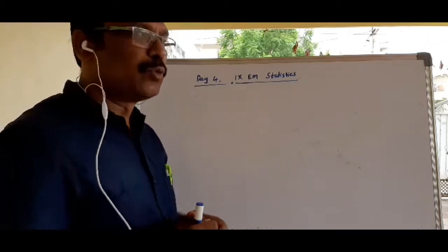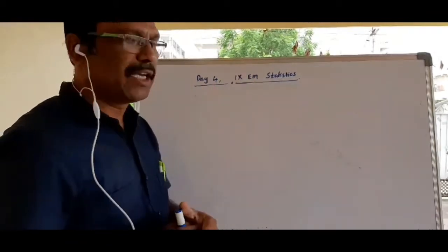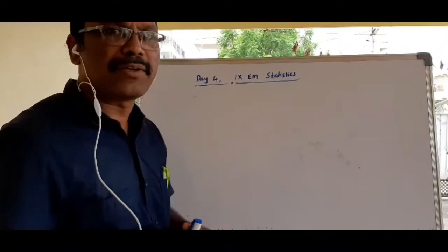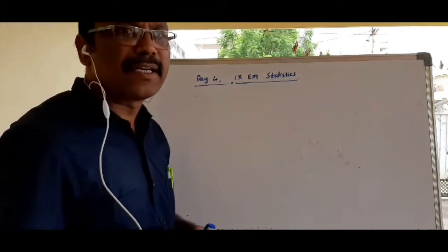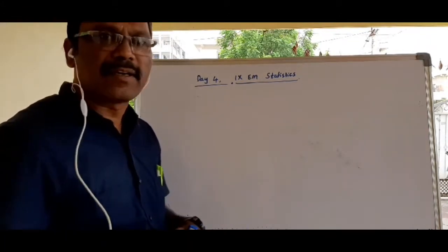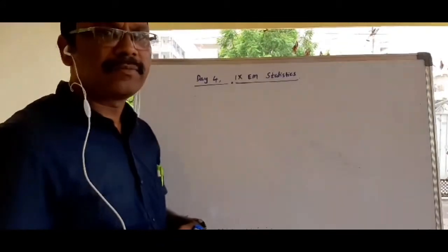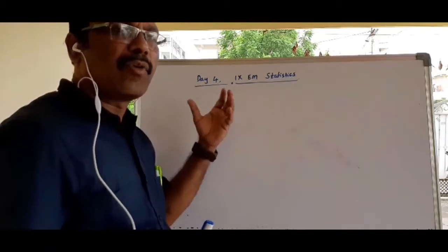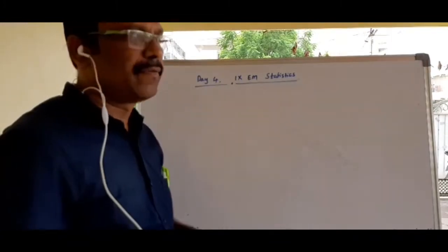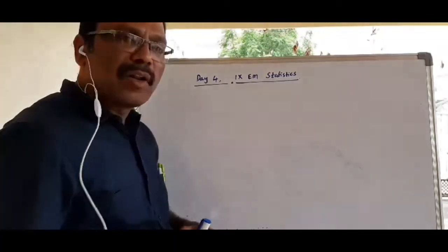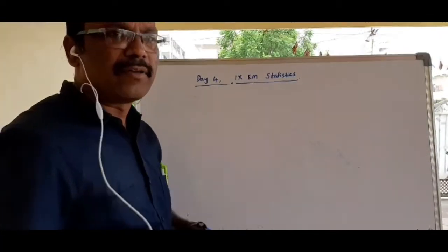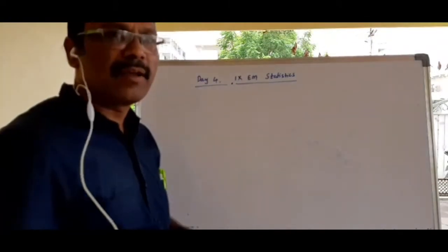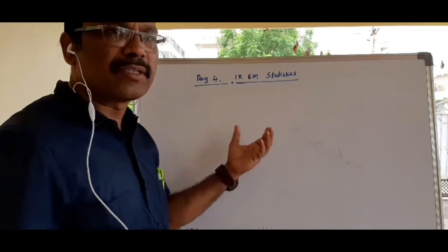Hi students, welcome to day 4 of 9th class English Medium Statistics. Yesterday we discussed the graphical representation of raw data and the measures of central tendency. We have three measures of central tendency: the arithmetic mean, the median, and the mode. Yesterday we already discussed the arithmetic mean for raw data. The formula is: mean equals sum of all observations divided by number of observations. From that we derived two auxiliary formulae and discussed some applications.